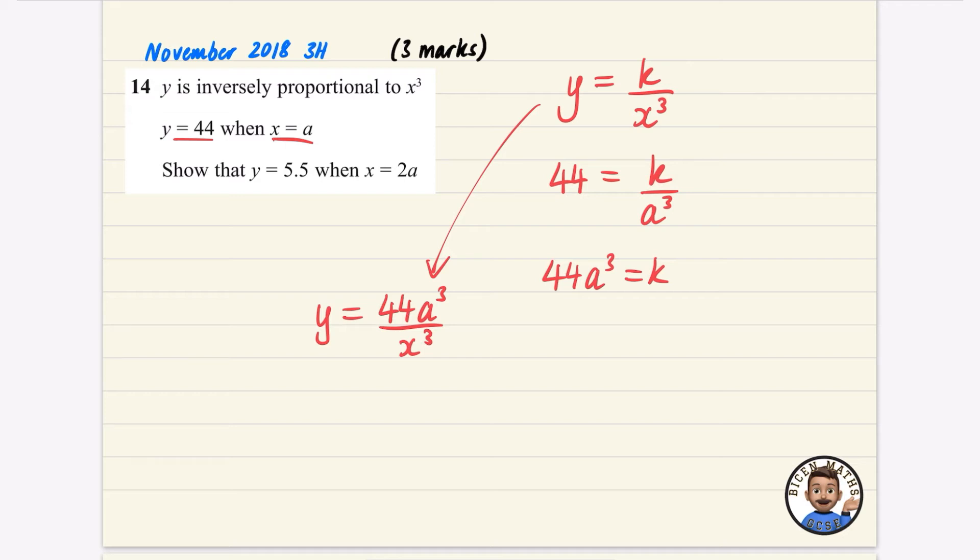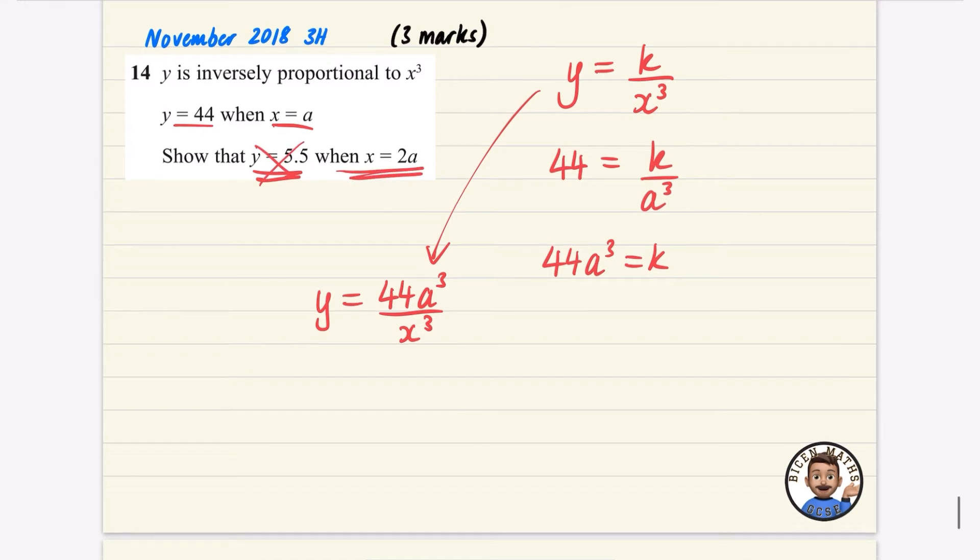And they've said that when, sorry, that Y equals 5.5 when X equals 2A. So I'm not going to use this. I'm going to try and show that this is the right answer when X is equal to 2A. So when X is equal to 2A, Y is going to be equal to 44A cubed divided by 2A all cubed.